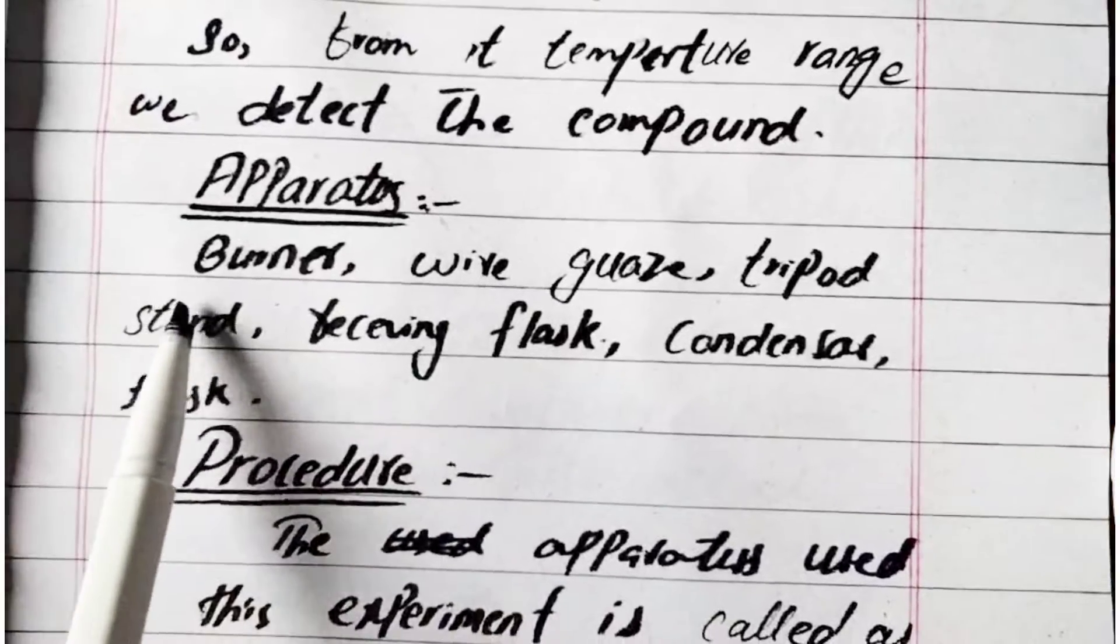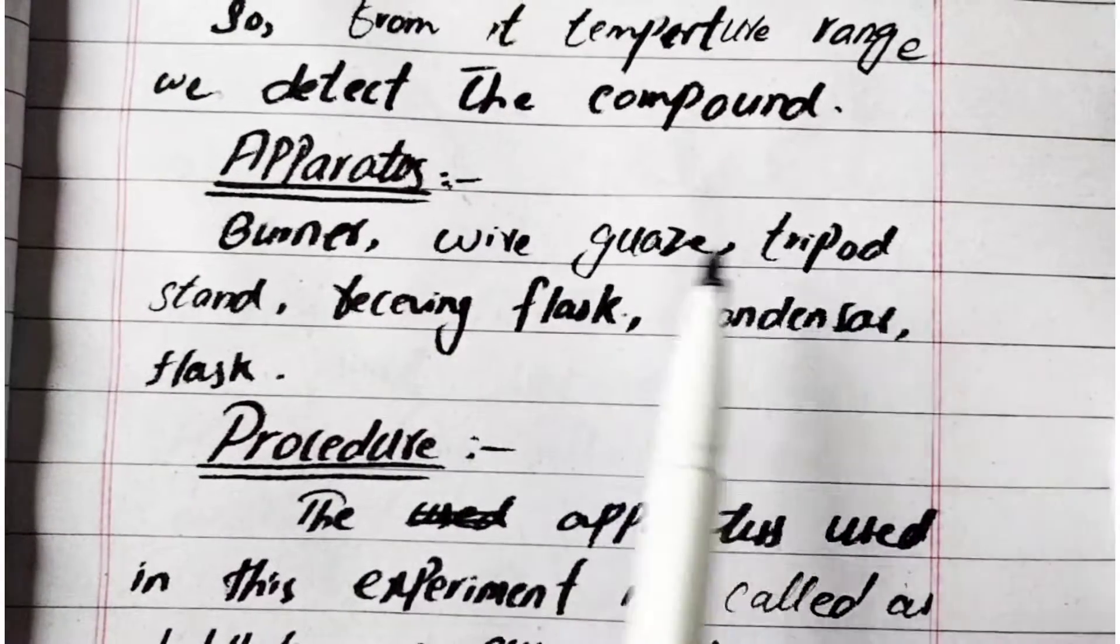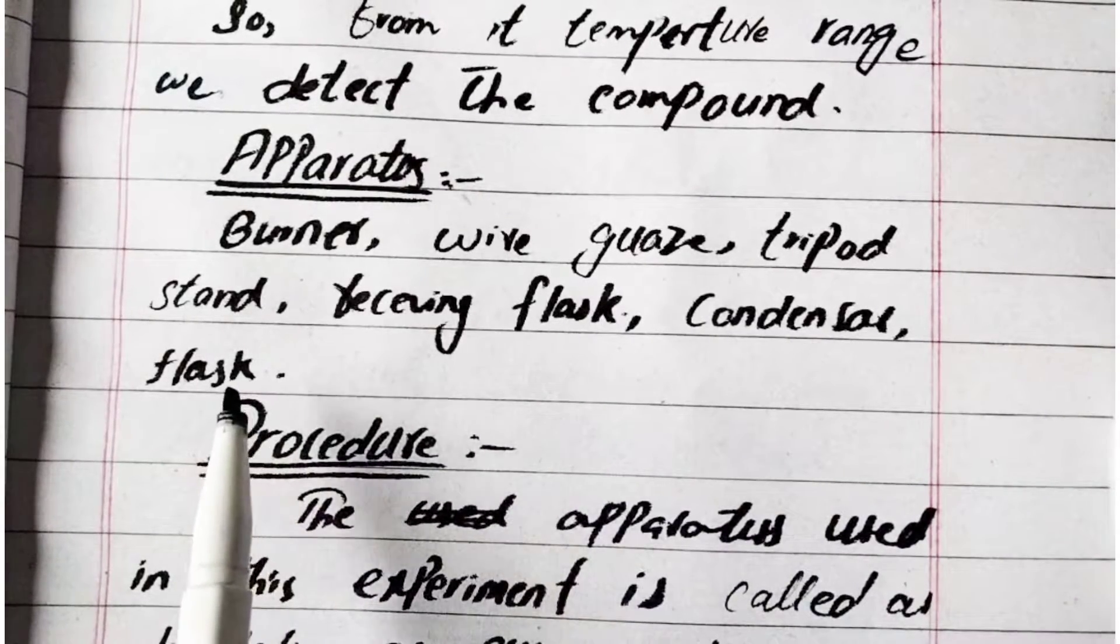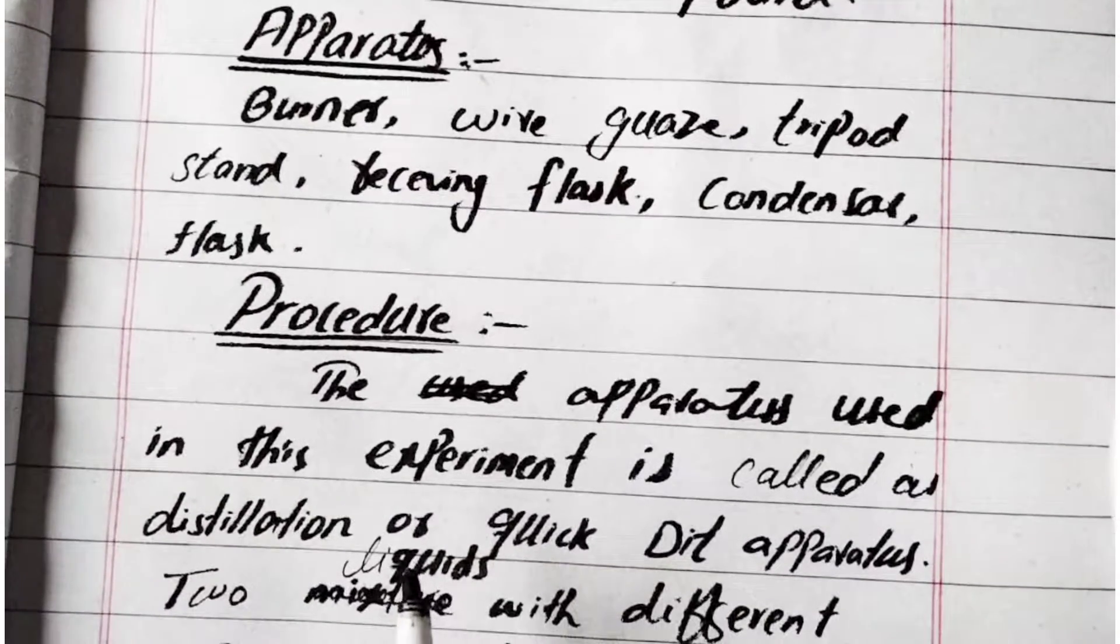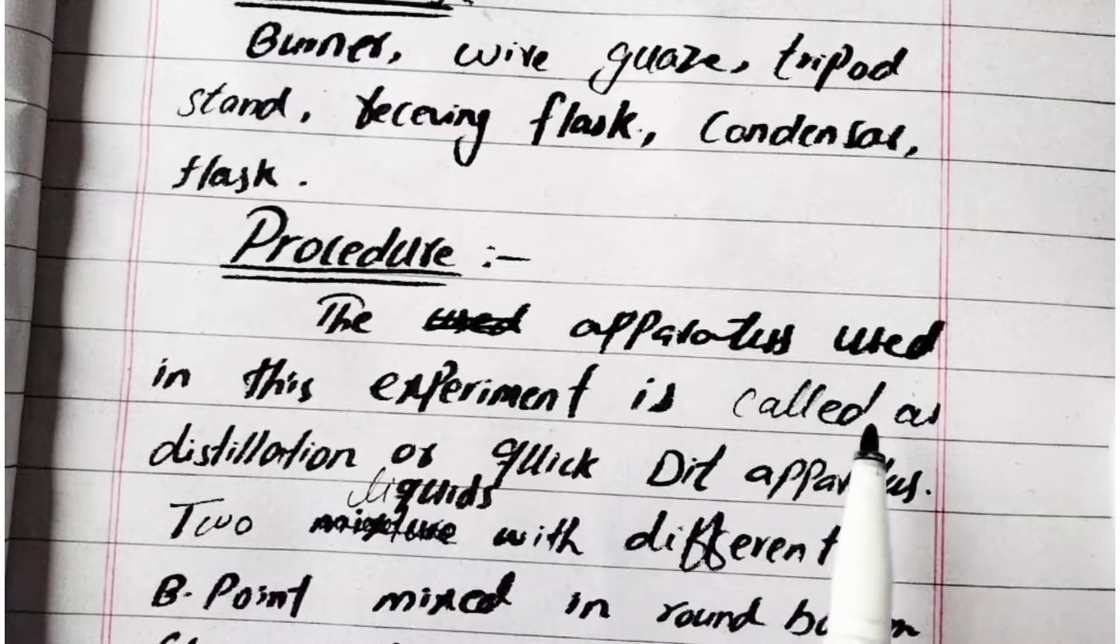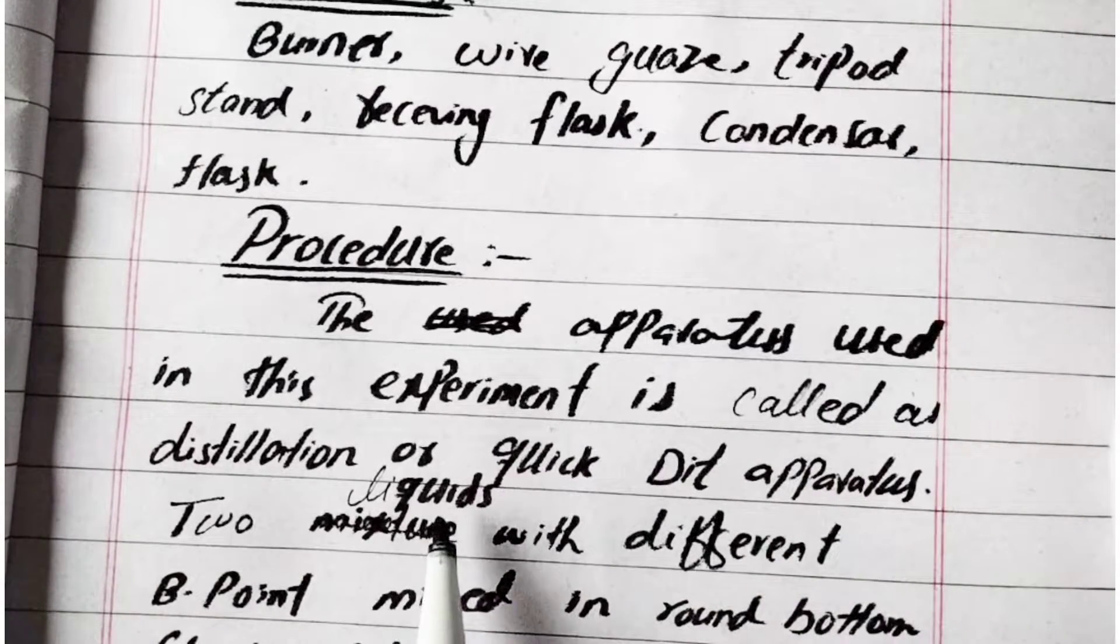Apparatus used in this case is burner, wire gauze, tripod stand, receiving flask, condenser, and flask. What is the procedure to conduct this experiment? The apparatus used in this experiment is called distillation or quick distillation apparatus.